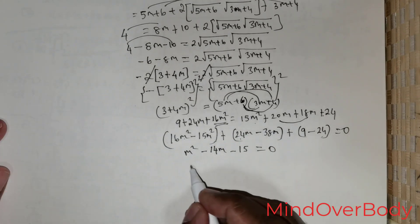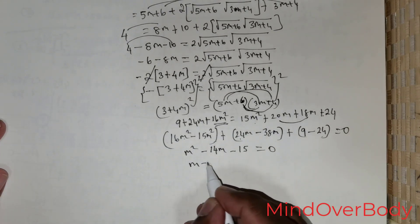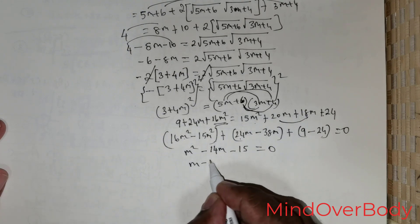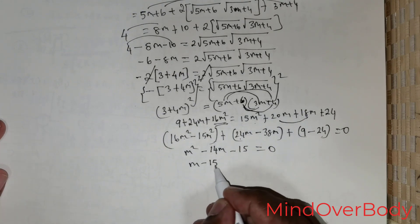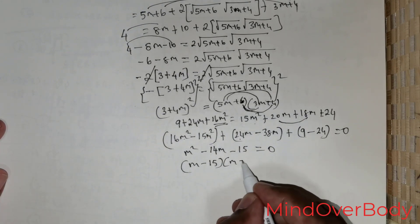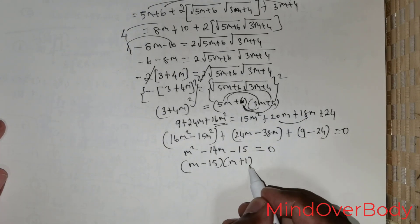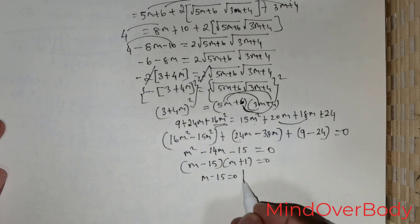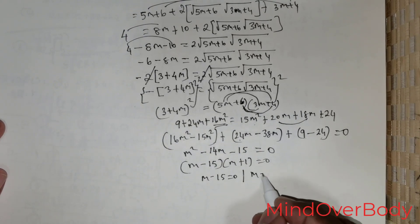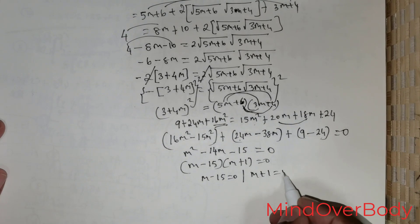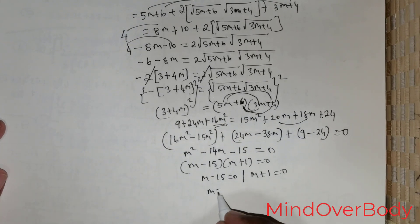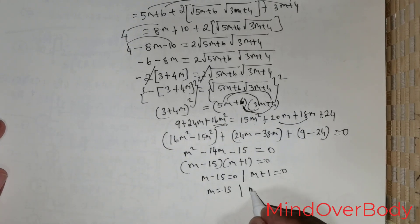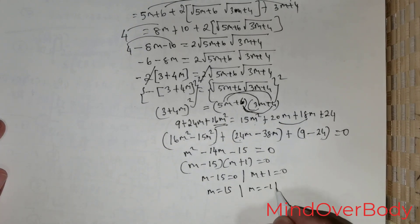This can be easily factorized. I can rewrite this as (m minus 15)(m plus 1) equals 0. From here, m minus 15 equals 0, giving m equals 15, and m plus 1 equals 0, giving m equals negative 1. So we have the values for m.